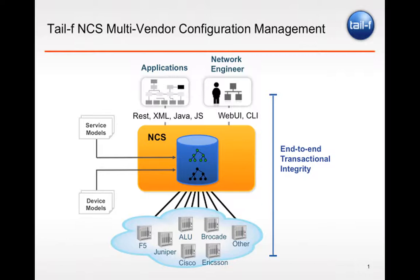In case of failure, NCS automatically rolls back any change — there will never be any stale configs in the network. Users can also bring up rollback files and execute them in order to rollback the network to a previous known state.